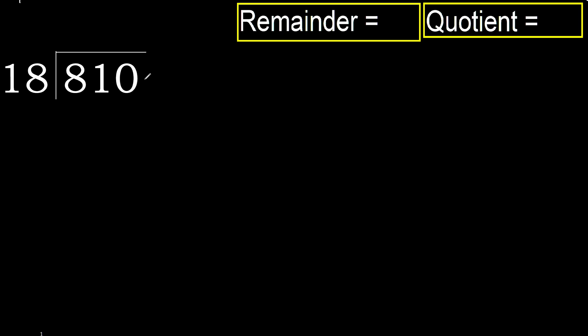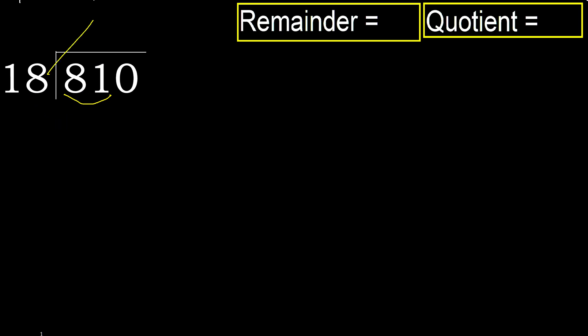810 divided by 18. 8 is less, therefore next. 81 is not less, therefore we work with 81. We find which number 18 multiplied by is nearest to 81 but not greater.